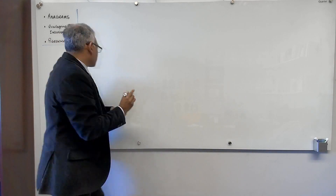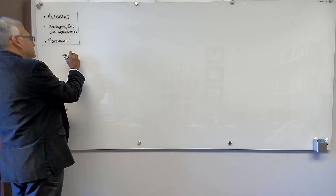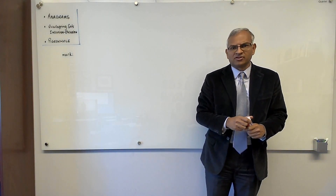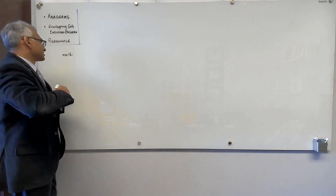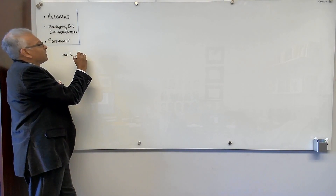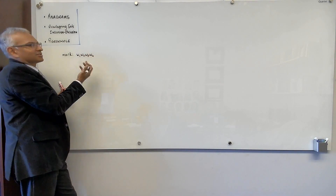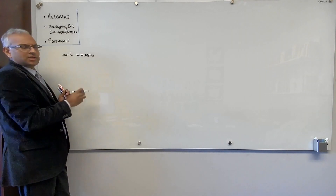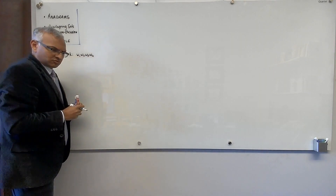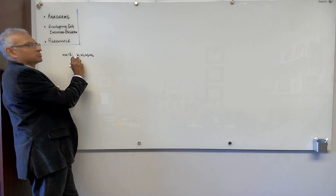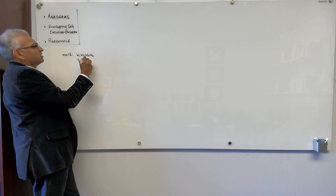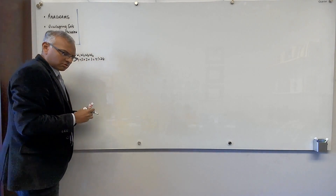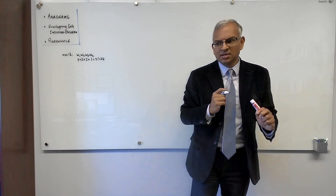Consider the sequence of letters M, A, R, K. How many words can we get by arranging these letters in various different ways? Think of it as four students whose first initials are M, A, R, K running a race — how many finishing orders are there? There are four ways to pick the first letter, then three, then two, then one. The product rule says multiply: 4 factorial equals 24. So the number of different permutations of the letters of MARK is 24.